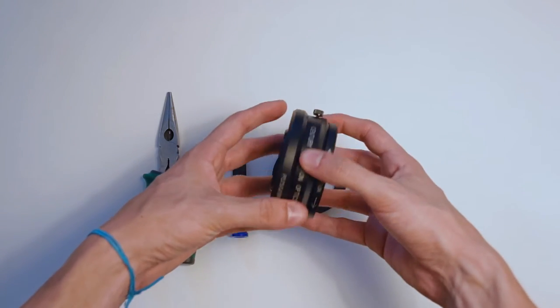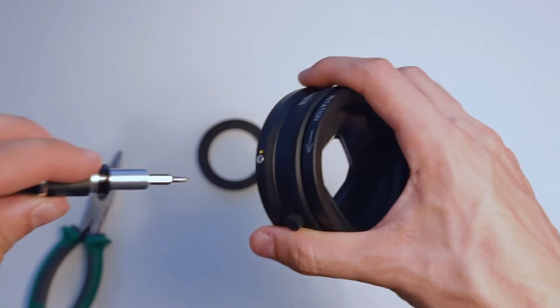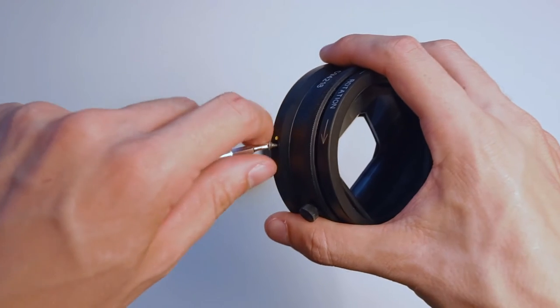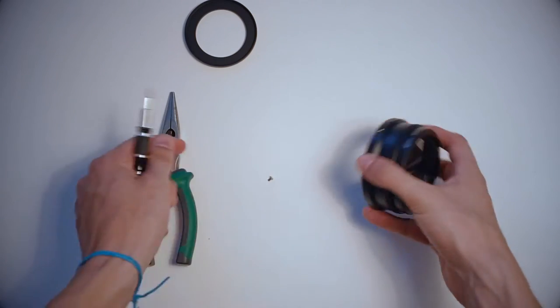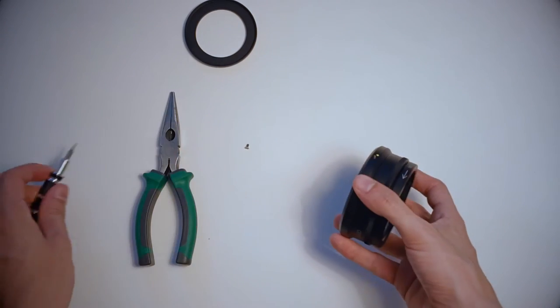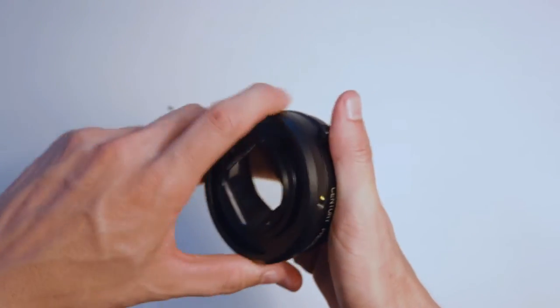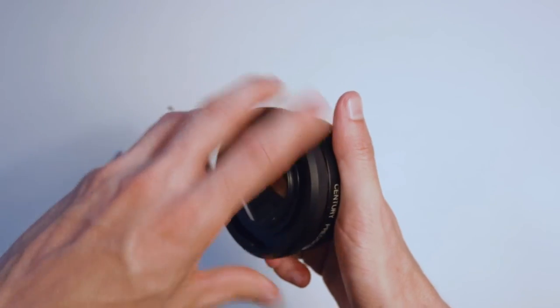First, remove the screw on the side - be careful not to lose it. Just take it off, then unscrew the lock by rotating until it pops off.